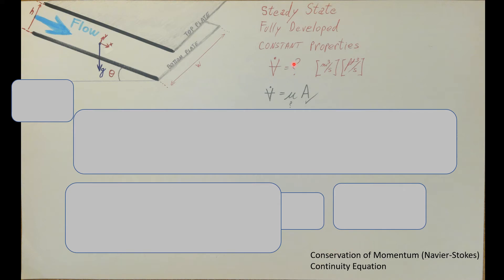In order to find our velocity function U, we're going to rely on the conservation equations — conservation of momentum, conservation of mass, and conservation of energy. Do we have any heat transfer and temperature data given? No, so we're not going to use conservation of energy. To find the volumetric flow rate we need velocity, and if we solve conservation of momentum that's what we'll get — the velocity function. We'll use conservation of mass as a side help to solve conservation of momentum.